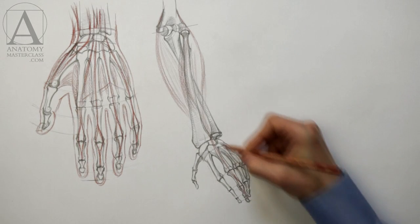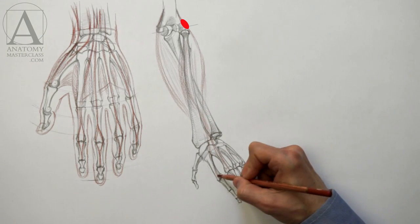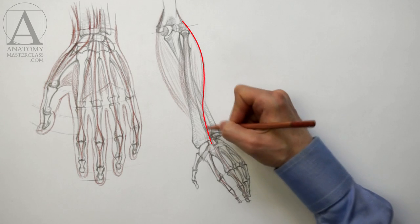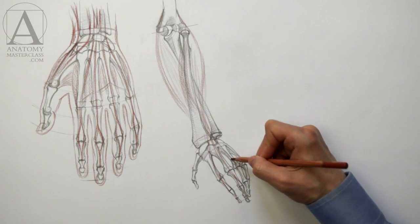The extensor group of the lower arm originates at the outer, lower edge of the humerus. It travels downward to the backside of the hand. The main function of this muscle group is to extend the hand.